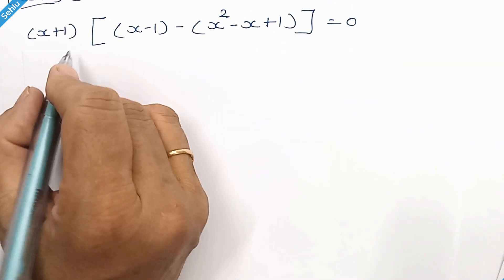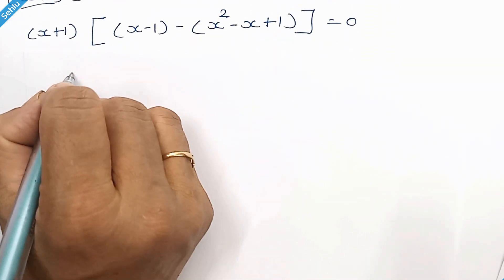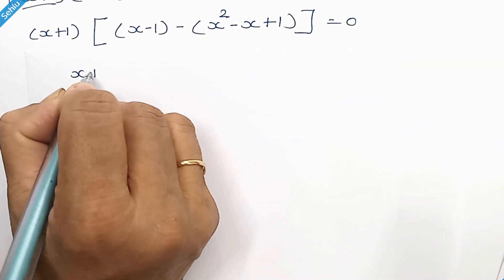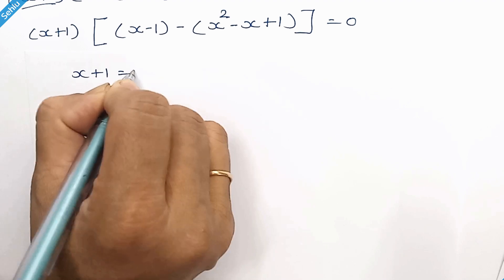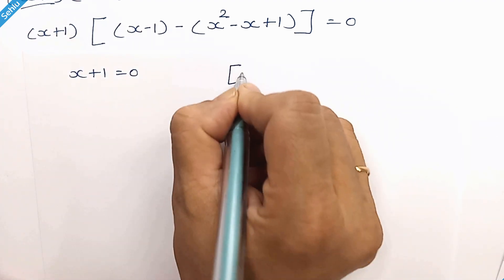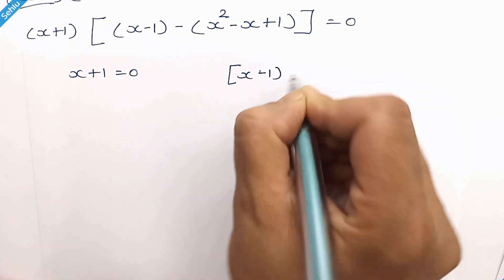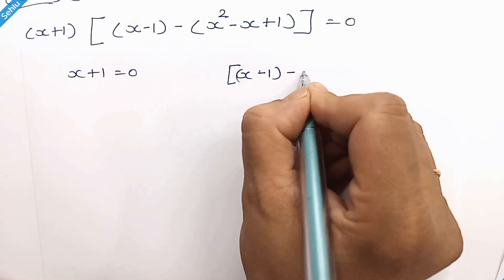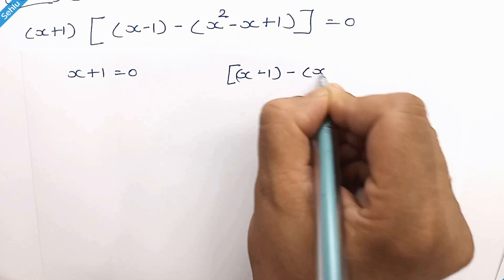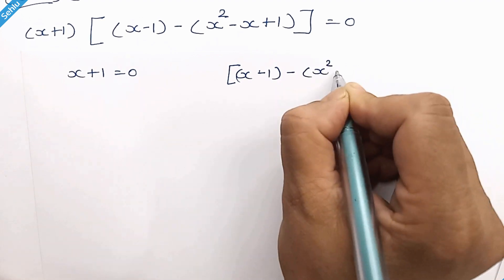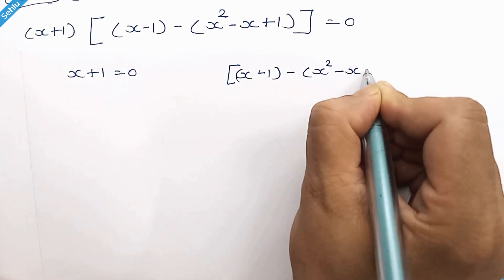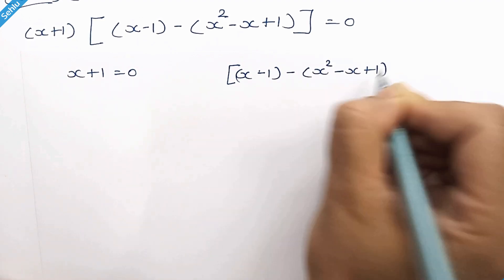Now from here we can compare: x plus 1 equals 0, and the second factor is x minus 1 minus (x squared minus x plus 1).